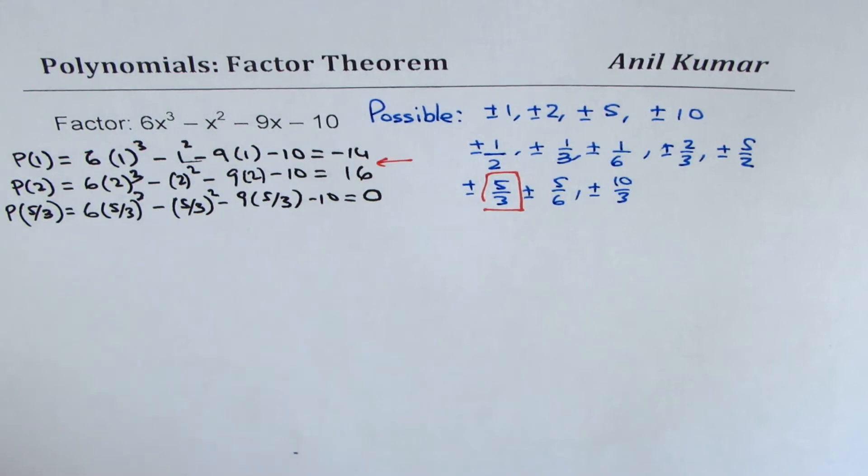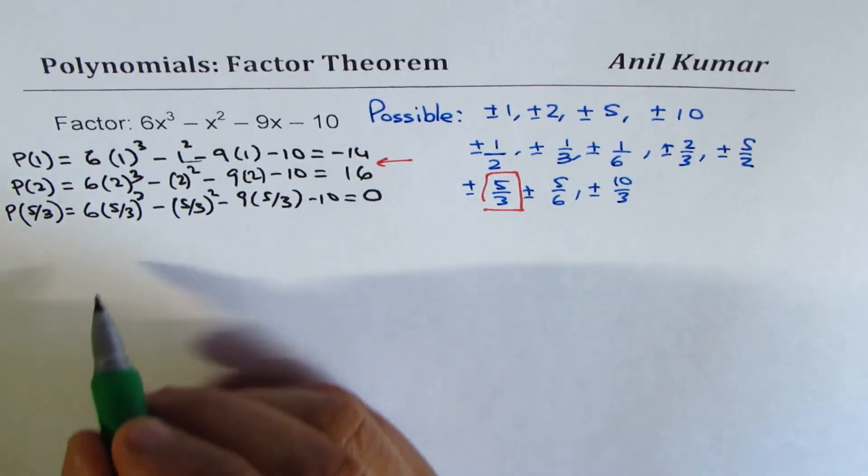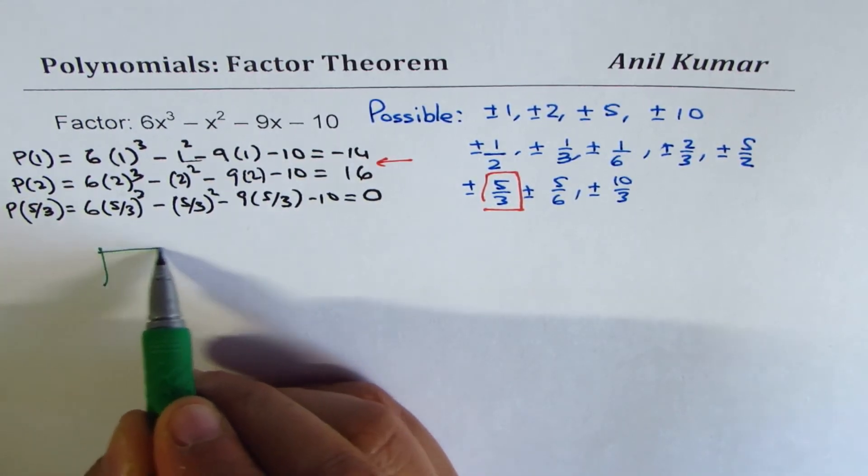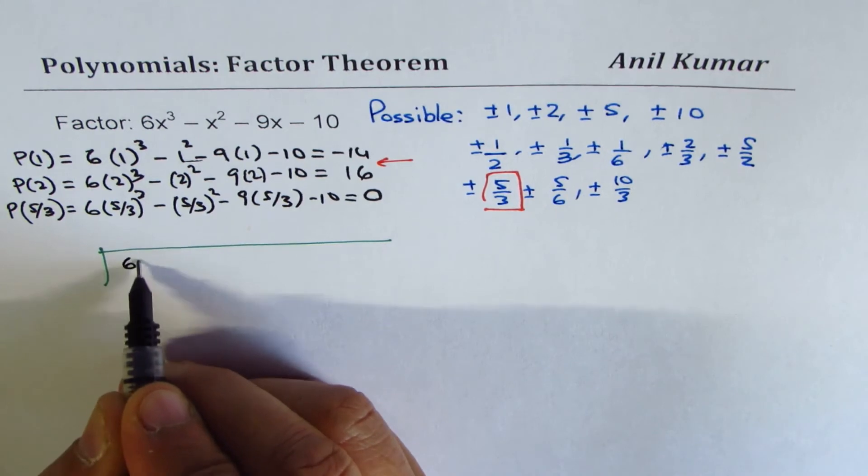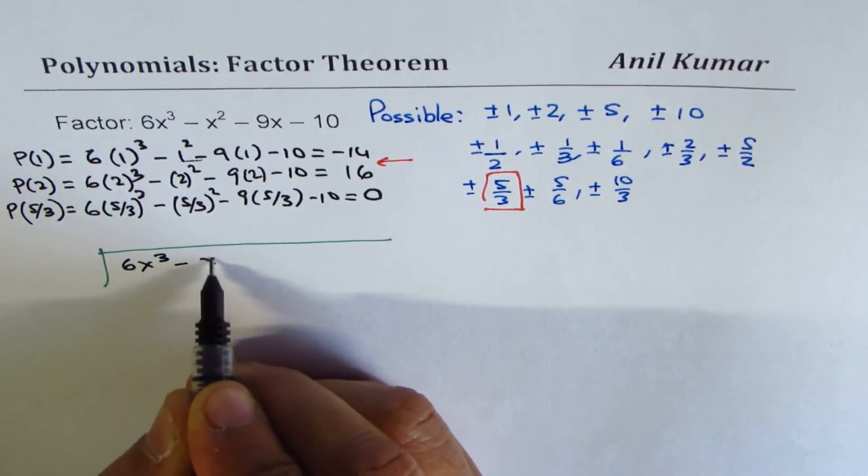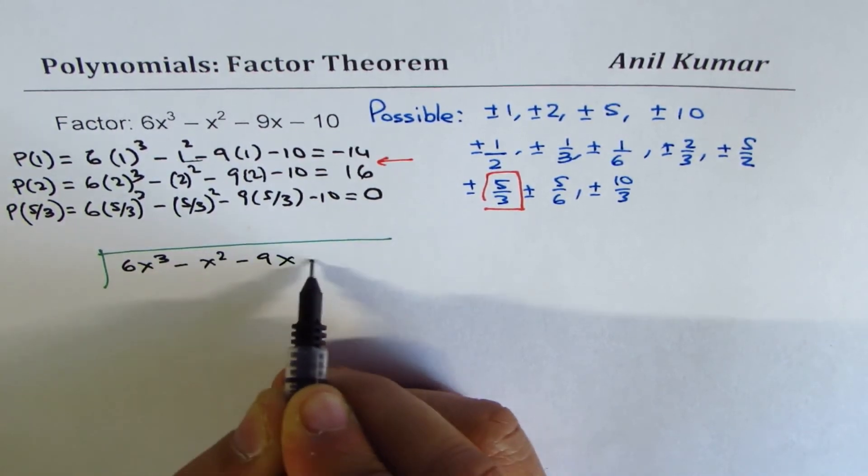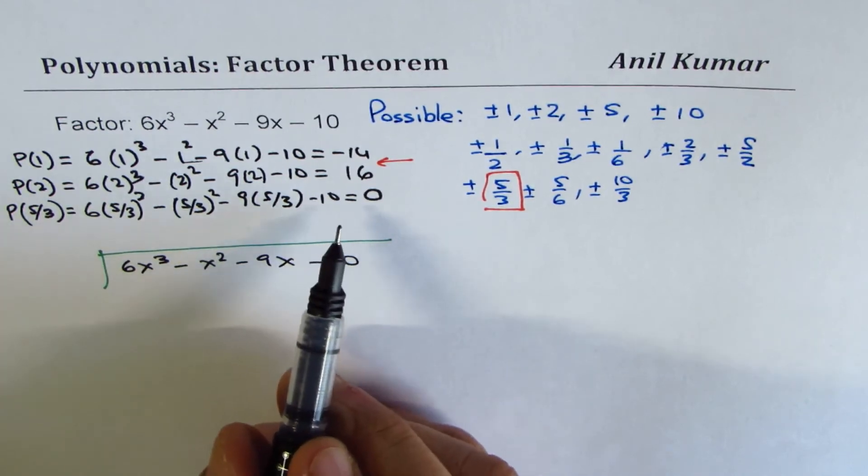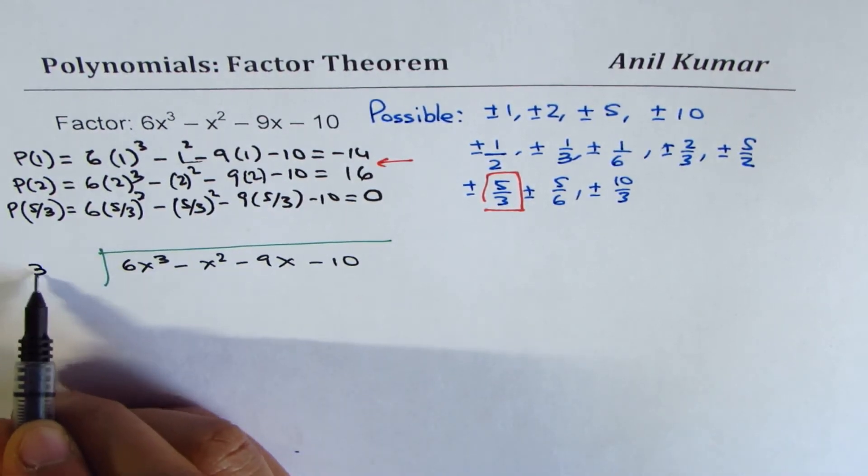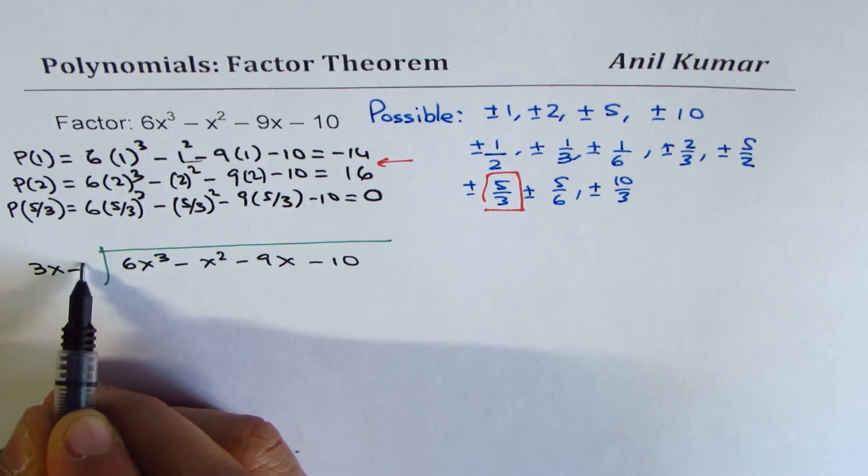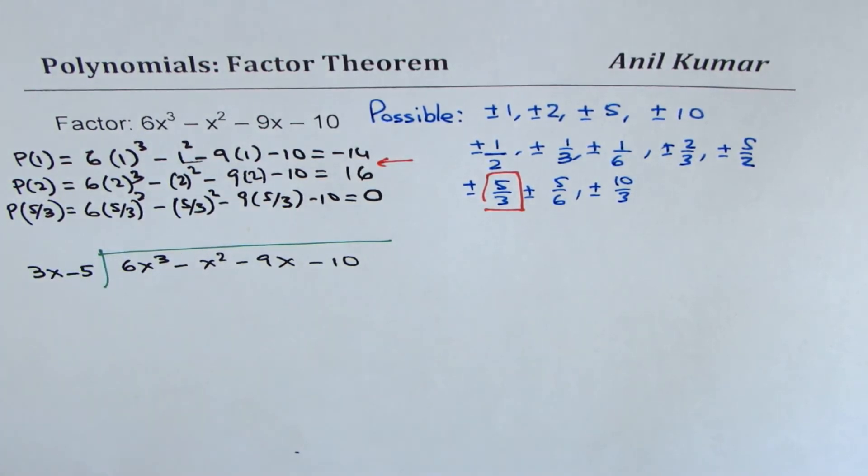Now, once you get a factor, we know it's a cubic equation, we can do long division or synthetic division to get our result. So let me do long division now. We'll divide 6x³ - x² - 9x - 10 by the factor 5/3. That really means it is 3x - 5.